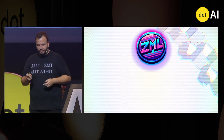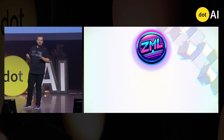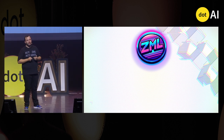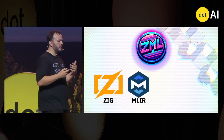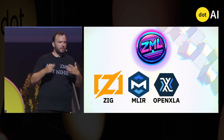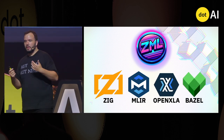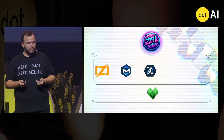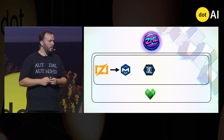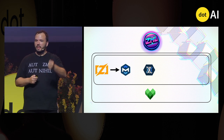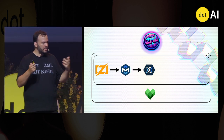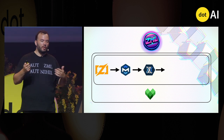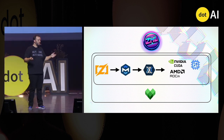And for that, this is why we introduced ZML. ZML is a stack built on four main components: ZIG as the frontend, MLIR as the compiler interface technology, OpenXLA as the compiler ecosystem, and Bazel as the build tool and orchestration. ZIG models are lowered to MLIR code, fed to an OpenXLA ecosystem compiler, which can then build it for CUDA, AMD, Google TPU, and so many more. All of this is orchestrated by Bazel.